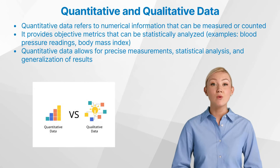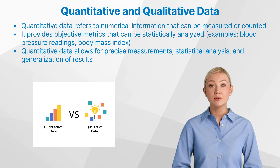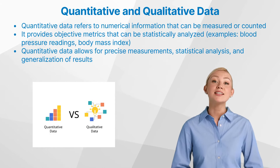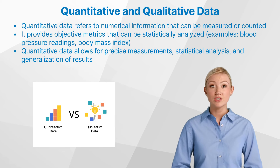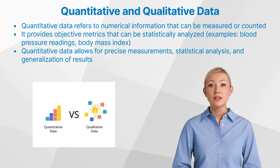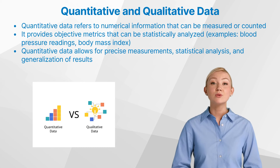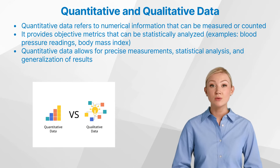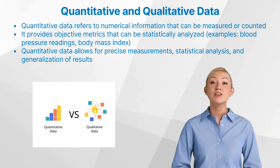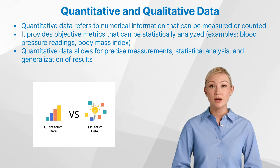Qualitative data, on the other hand, is descriptive and subjective. It is often collected through interviews, observations, or open-ended questionnaires. In clinical trials, this type of data might include patients' descriptions of their symptoms, their feelings about the treatment, or their perceived quality of life. Qualitative data helps provide context and depth to the numerical data collected. It can help researchers understand why a treatment works or doesn't work for certain individuals, and can reveal insights that might not be captured through numbers alone.